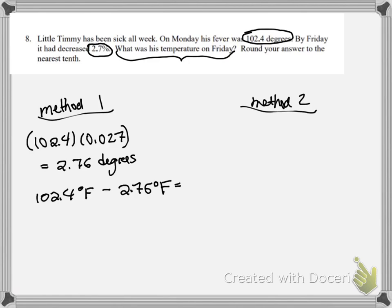So we're going to do minus 2.76 degrees Fahrenheit. So we can't just stop at 2.76. That doesn't make sense. And we get about 99.64 degrees, which is almost normal. So it sounds like he's getting better.